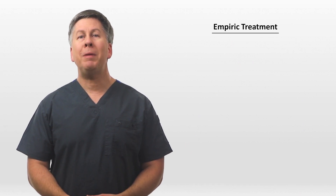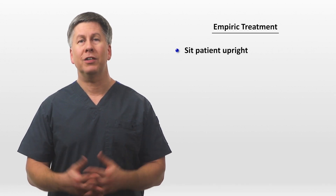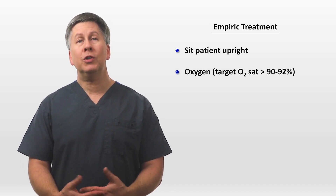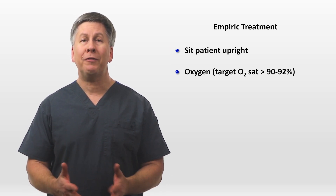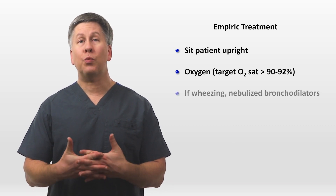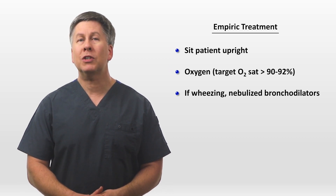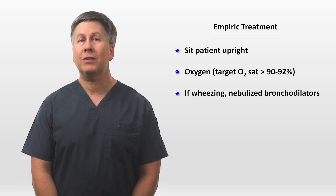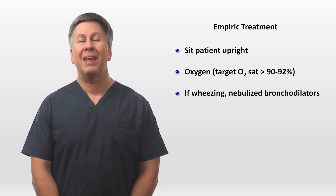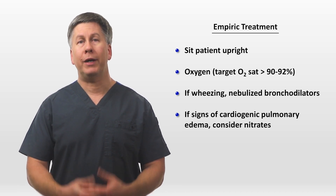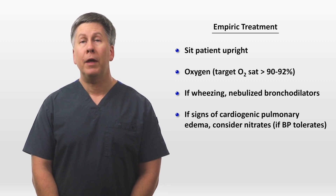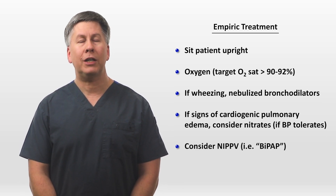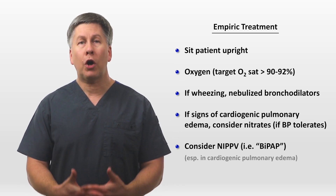While still gathering data, it may be necessary to start empiric treatments. First, make sure the patient is sitting upright — this improves cardiogenic pulmonary edema and limits any additional aspiration. Give them oxygen, targeting an O2 sat greater than 90 to 92%; there is little physiologic benefit to boosting it higher. If the patient is wheezing, many will still benefit from a nebulized bronchodilator, but keep in mind albuterol may drive up the heart rate if the patient is already tachycardic or if you're concerned about demand ischemia. If there are signs of cardiogenic pulmonary edema, consider nitrates — sublingual nitroglycerin may transiently improve hemodynamics even in the absence of ischemia. Also consider non-invasive positive pressure ventilation or BiPAP, most helpful in situations that can be rapidly reversed such as cardiogenic pulmonary edema.